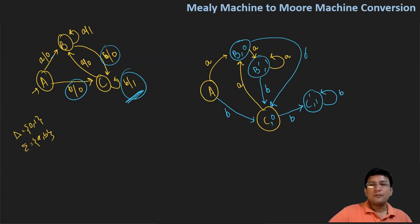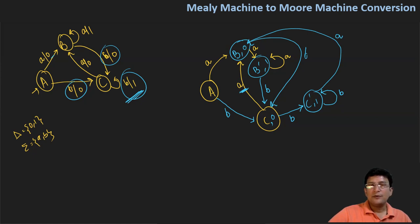Now let's see if this is complete. There is a slight change required because C by getting 'a' moves to B state and produces output zero. So C dash should also do the same thing — C dash on getting 'a' should move to state B and produce output zero. I have now seen all the transitions and have converted the Mealy machine to the Moore machine.